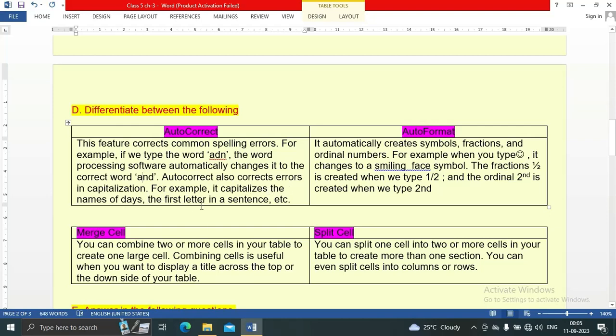Auto format automatically creates symbols, fractions, and ordinal numbers. For example, when you type certain characters it changes to a smiling face symbol. The fraction one-half is created when we type one slash two, and the ordinal 2nd is created when we type two and d, with nd as superscript.